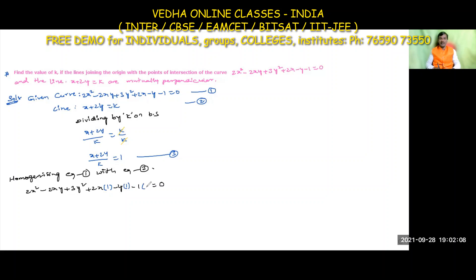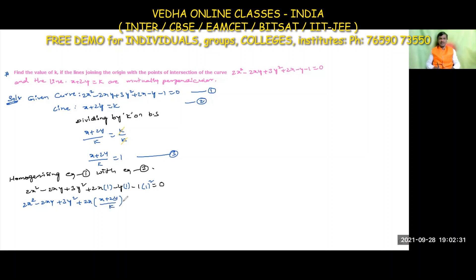Multiplying by 1 and 1², where 1 is replaced by equation 3, i.e., (x + 2y)/k. So we get: 2x² - 2xy + 3y² + 2x·[(x + 2y)/k] - y·[(x + 2y)/k] - 1·[(x + 2y)/k]² = 0.